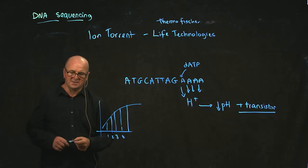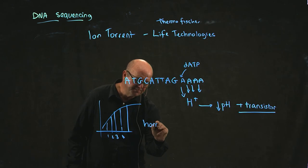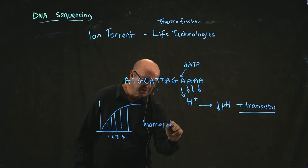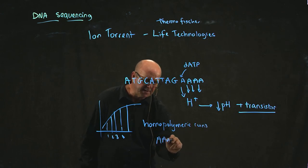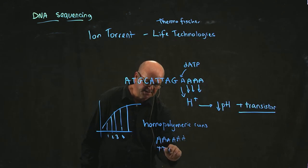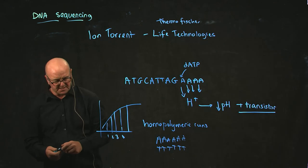And so Ion Torrent runs into the problem of detecting what are called homopolymeric runs. What that means is just a run of the same nucleotide, whether it's A's or T's or G's or C's. It just has an issue detecting it.